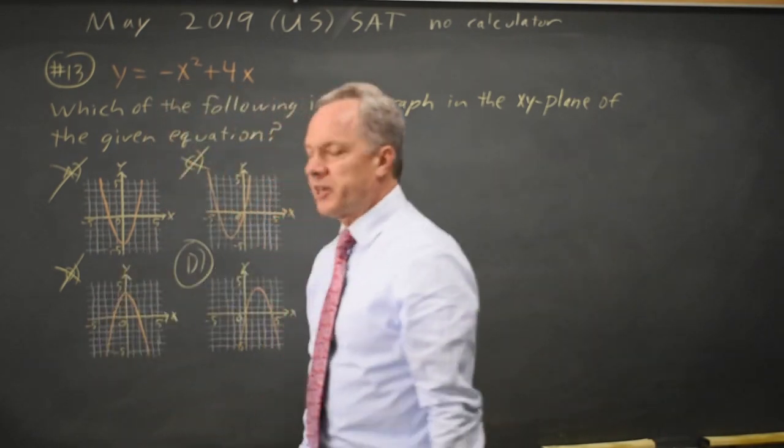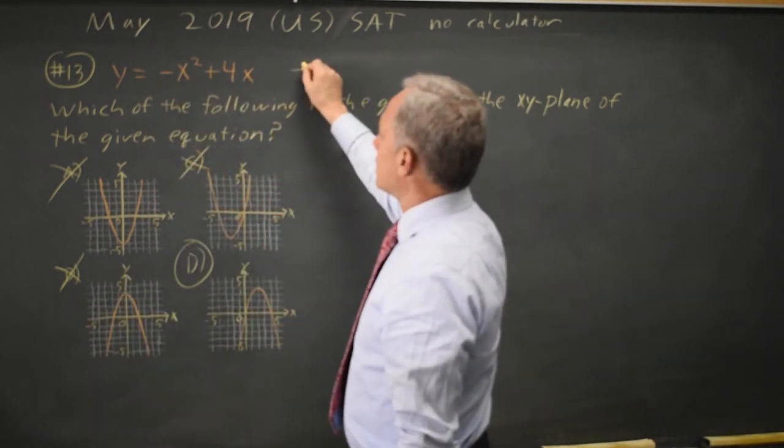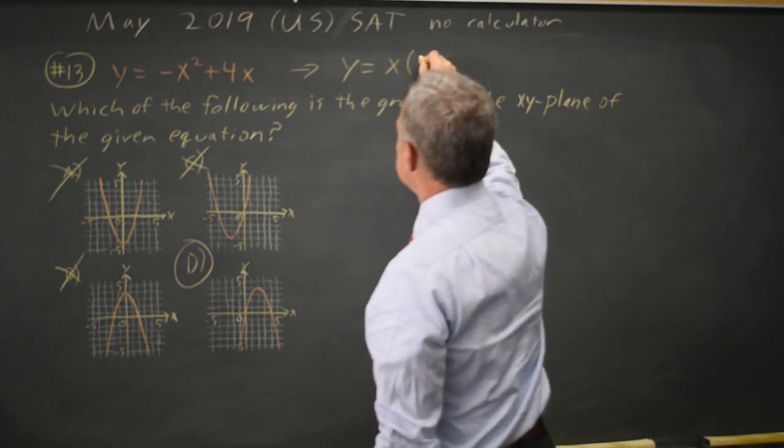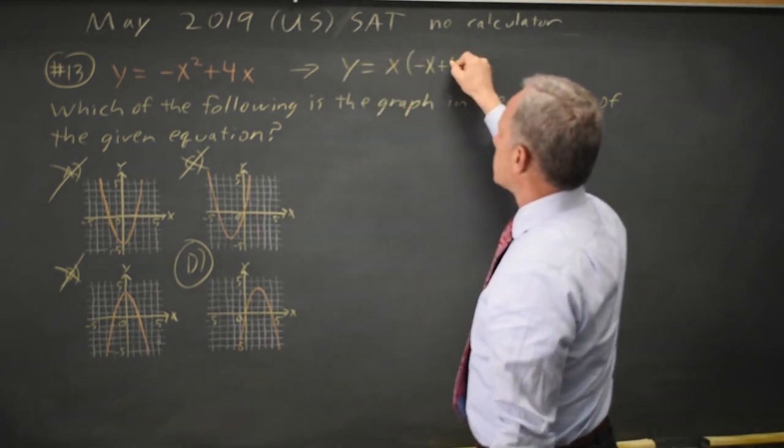D must be the right answer. I could also find the other zero by factoring y equals x times negative x plus four.